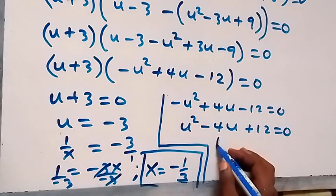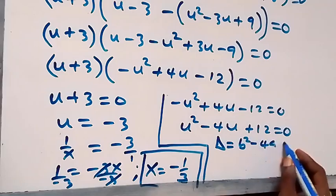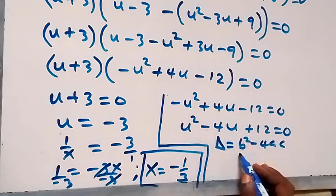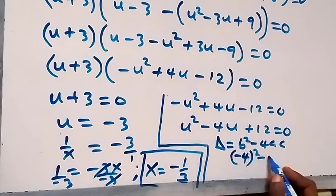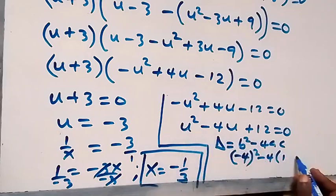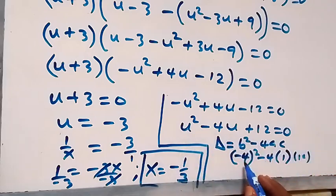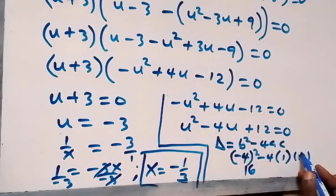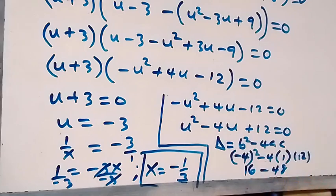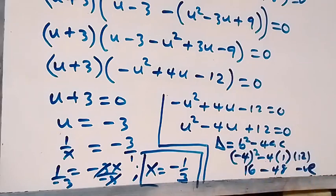Now let's check the quadratic u squared minus 4u plus 12 equals zero using the discriminant: b squared minus 4ac, where b is minus 4, a is 1, and c is 12. That gives 16 minus 48, which is negative — meaning this gives a complex solution. Therefore there is no real solution on this side, and the only real solution is x equals minus 1 over 3.